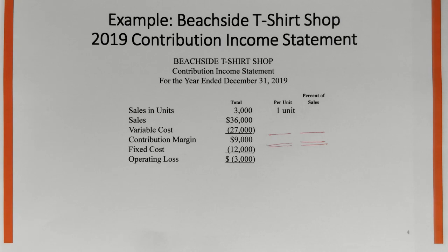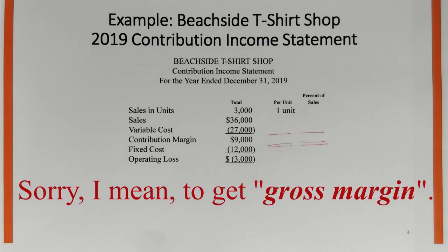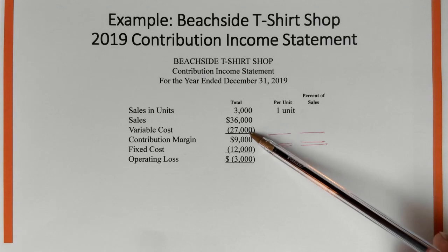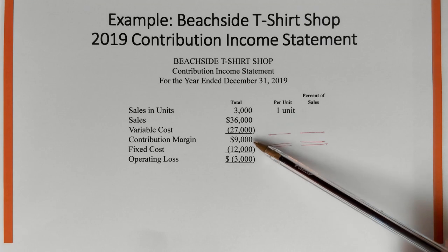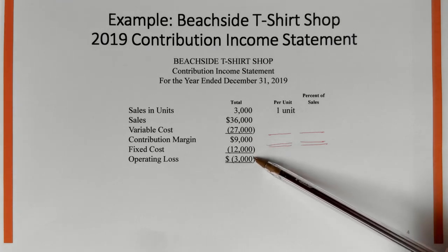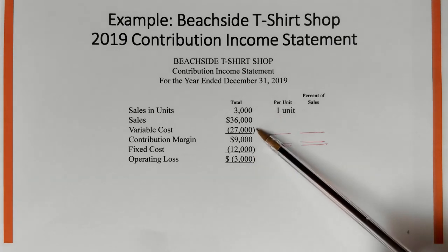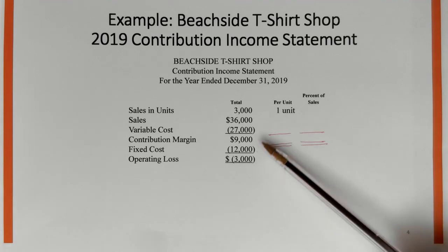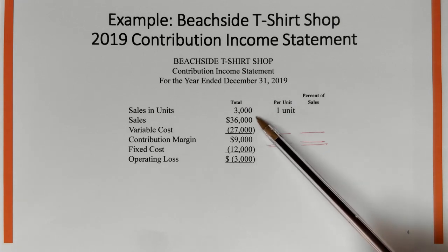This income statement is in the contribution format, which differs from financial accounting. Instead of taking sales minus cost of goods sold, here we take sales less all variable costs grouped together to arrive at the contribution margin. The contribution margin contributes towards fixed cost and operating income. Variable costs totaled $27,000 and fixed costs — such as rent, insurance, and advertising — total $12,000.